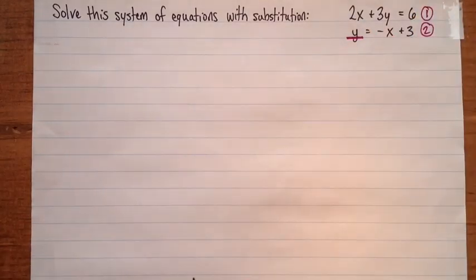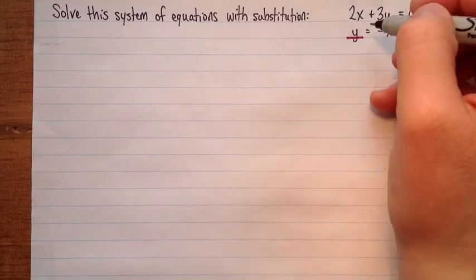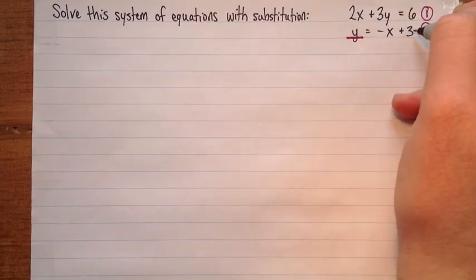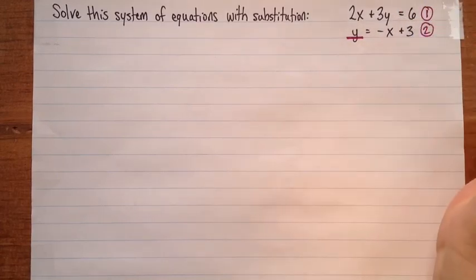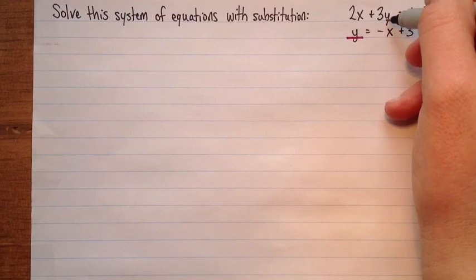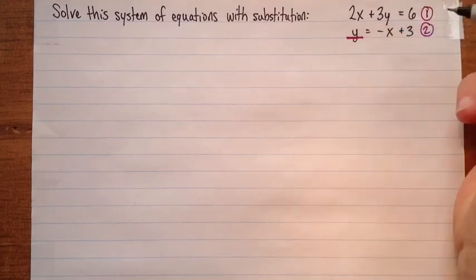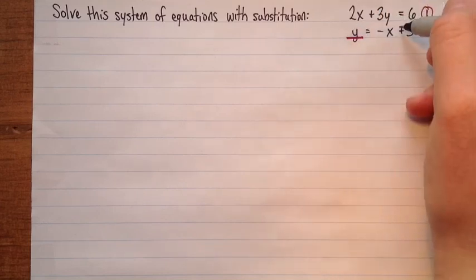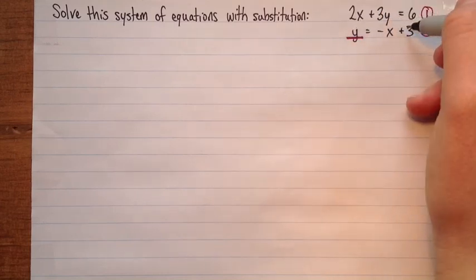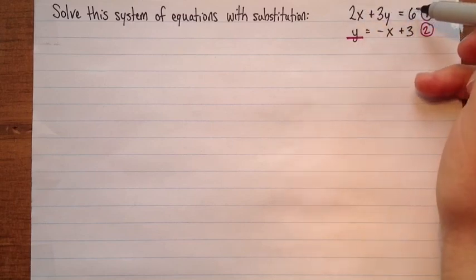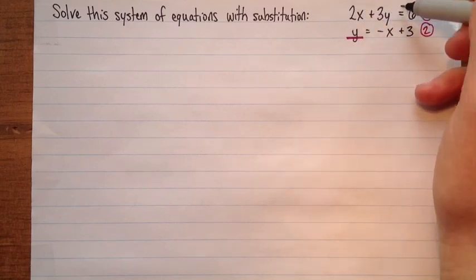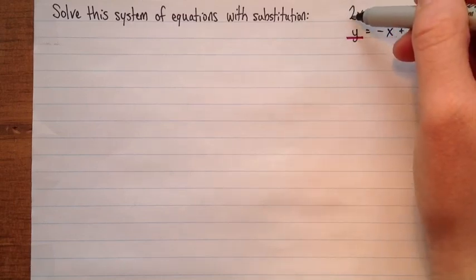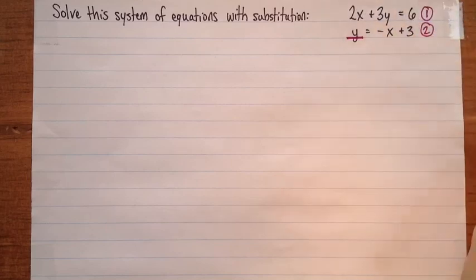Here's how we're going to start solving this system. If y is equal to negative x plus 3, then this y in equation 1 can be replaced with negative x plus 3. Because these two things are equal, I can replace one with the other. The advantage is that will give us an equation that only has x's in it, so we'll be able to solve it.